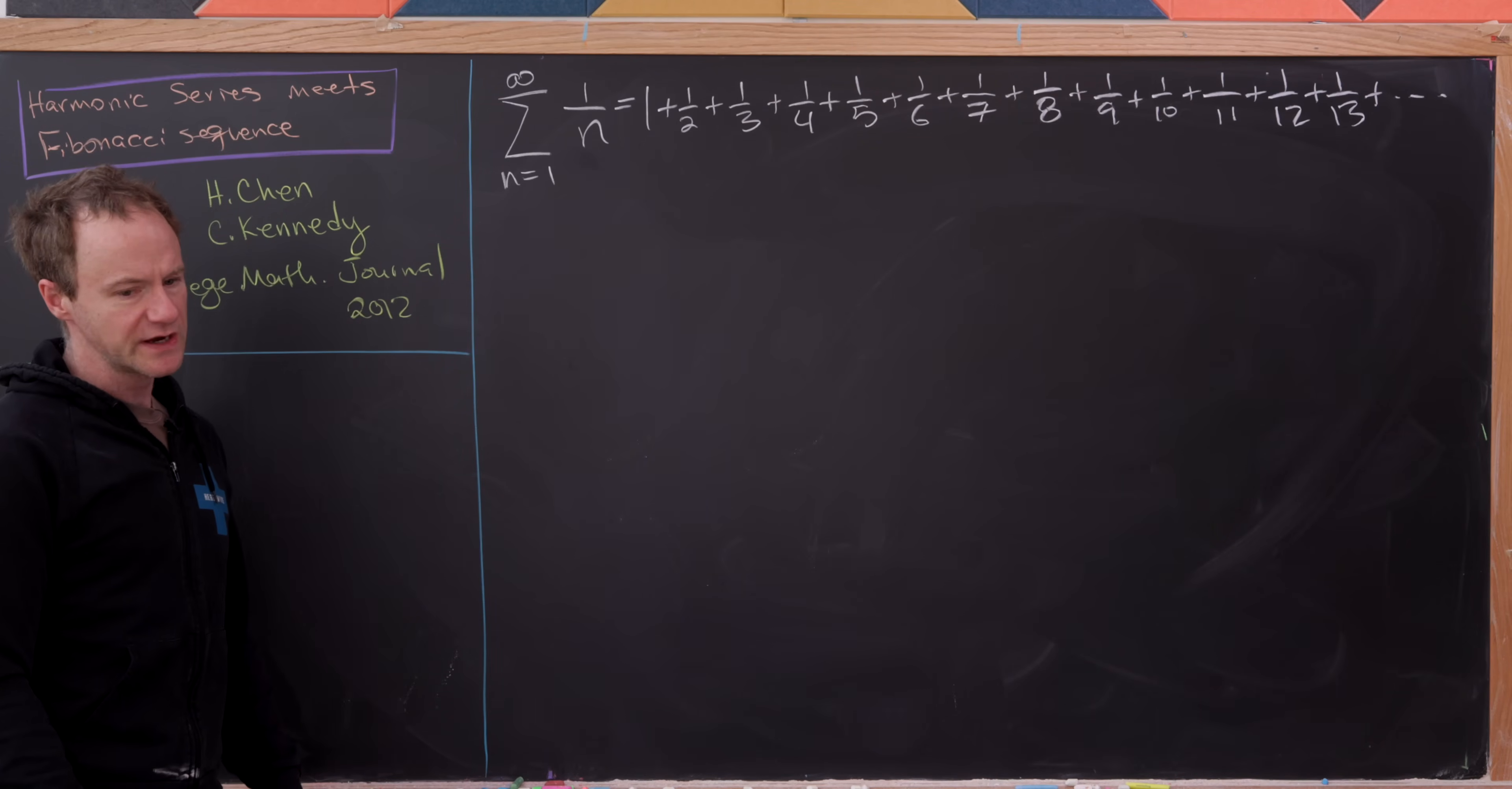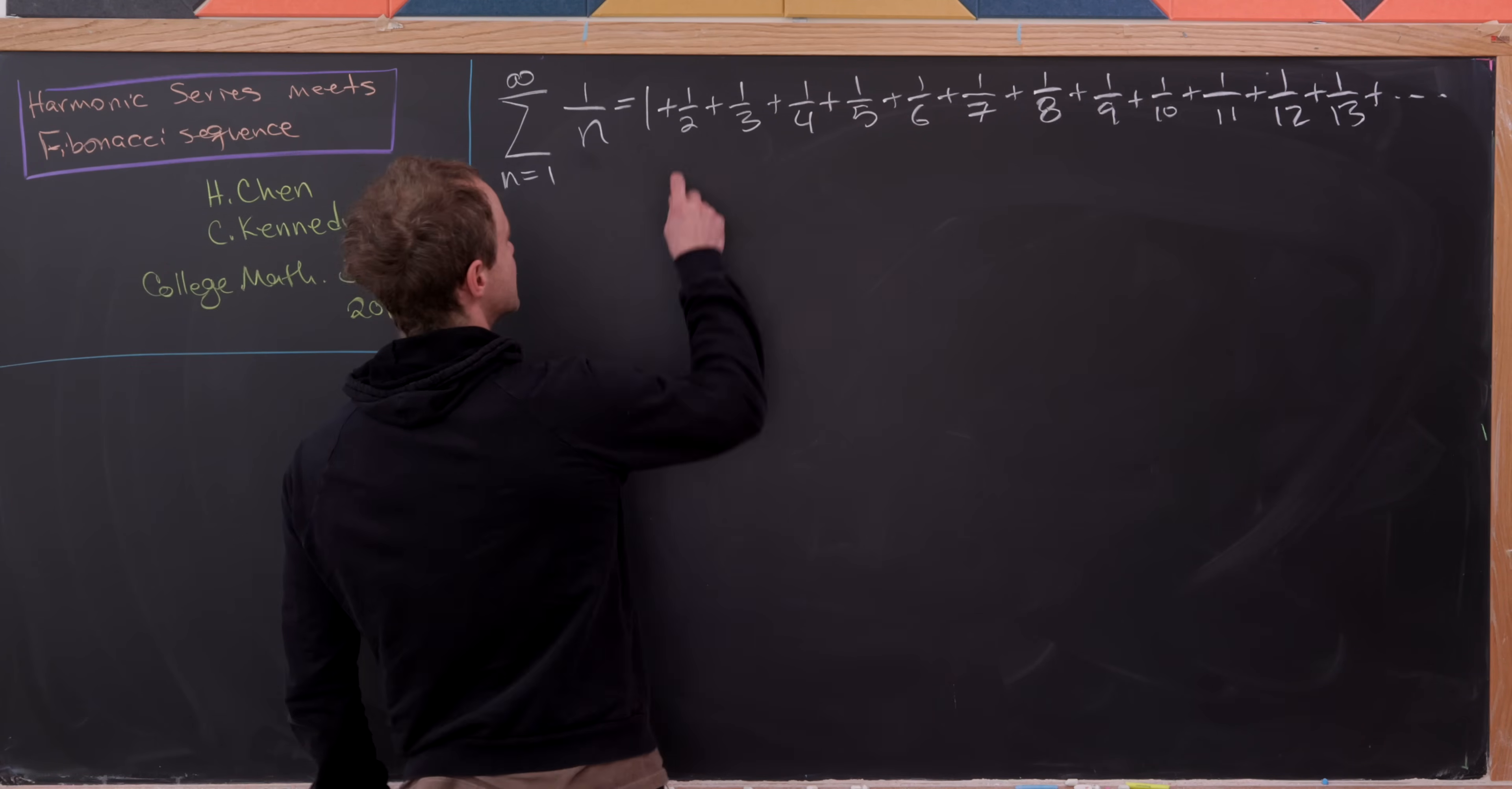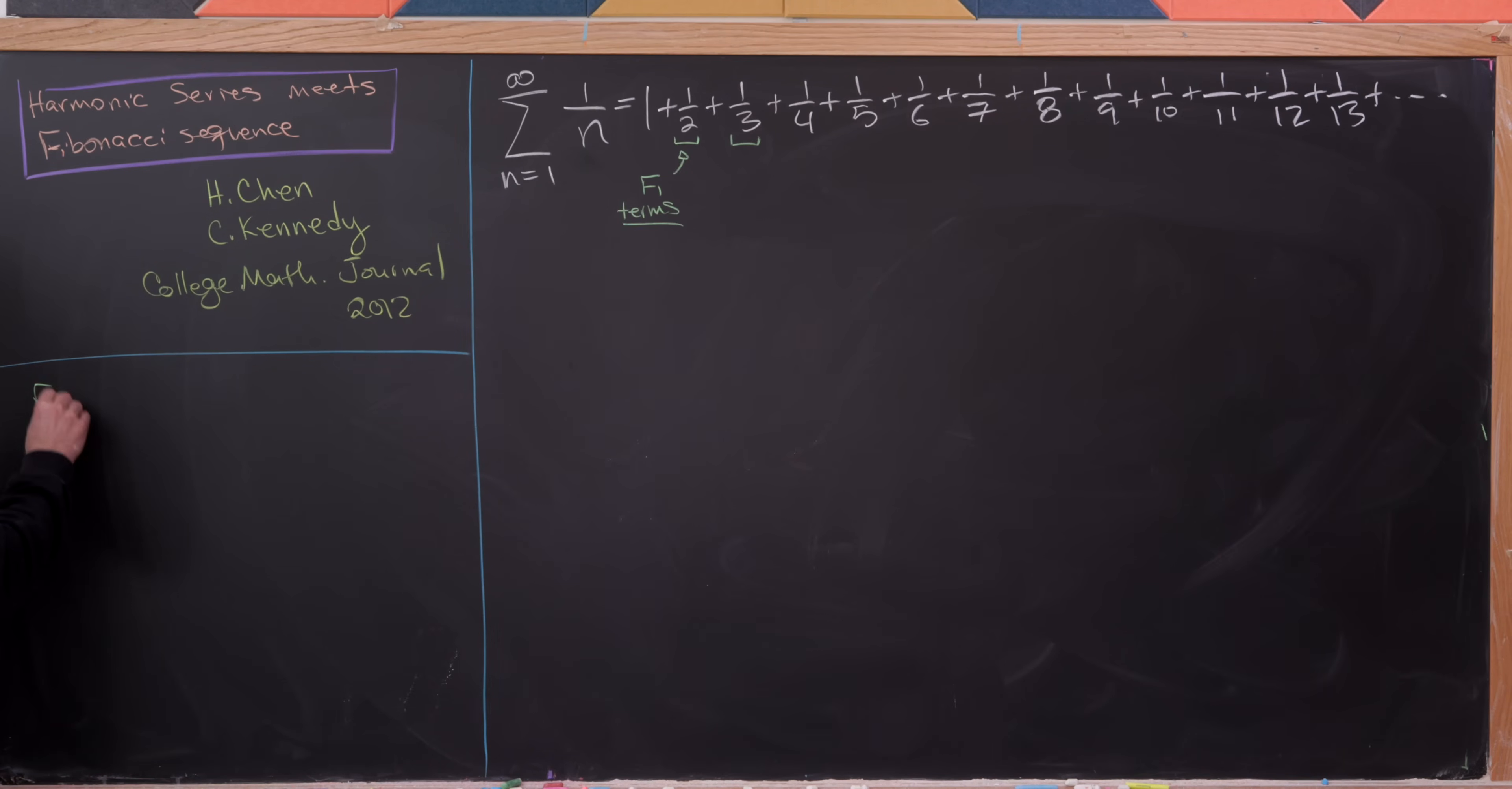And now we're going to do some grouping here, but in a way that is not typical. One way to do grouping is by powers of 2, but instead we're going to do grouping by Fibonacci blocks. So let's start by grouping a half with itself and a third with itself. And before we get ahead of ourselves, let's recall the Fibonacci sequence over here.